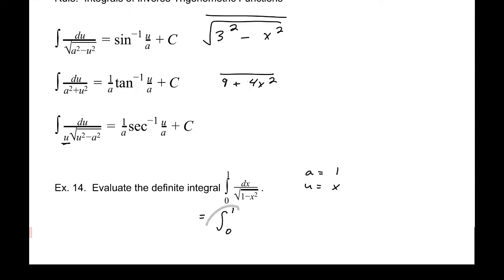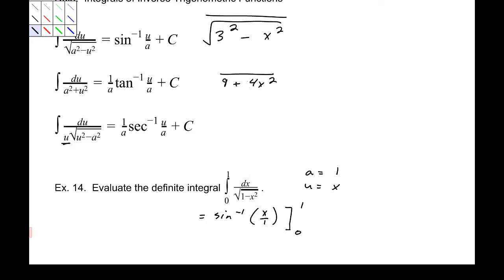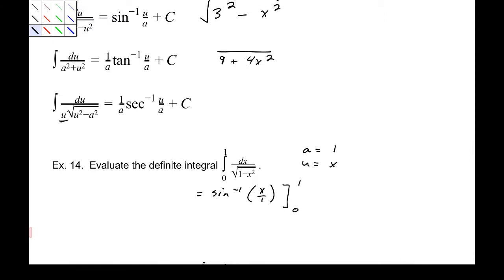We can go straight to the evaluation here. That is going to be arc sine of u over a — x over 1 — evaluated from 0 to 1. Plugging in 1: arc sine of 1 is pi over 2. Minus arc sine of 0, which is 0. So our answer is pi over 2.